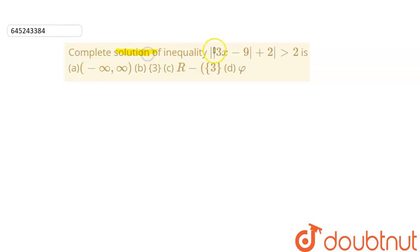The question is to find the complete solution of inequality |3x - 9| + 2 to be greater than 2.